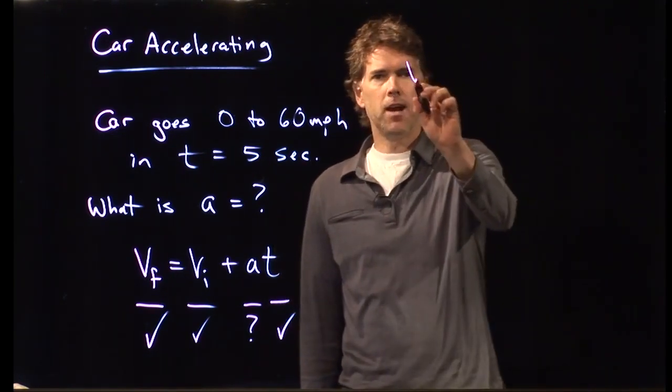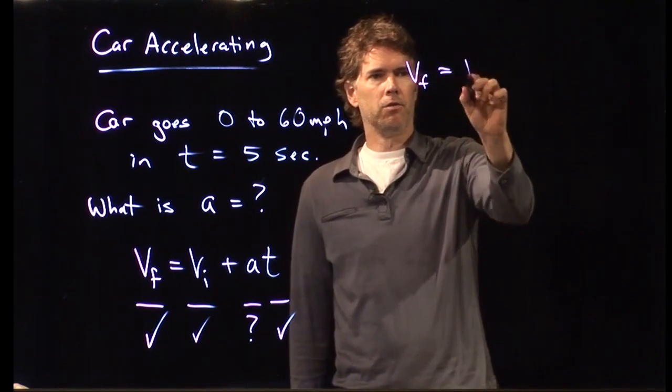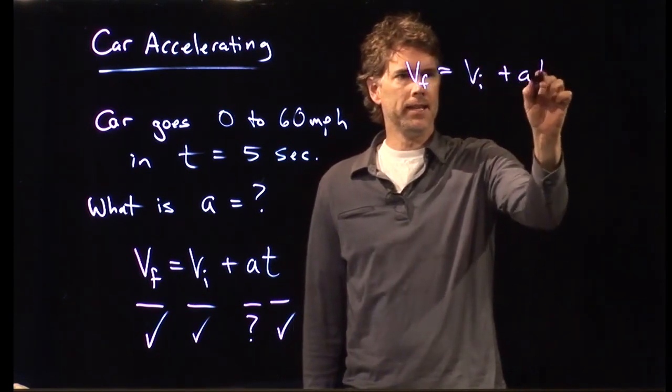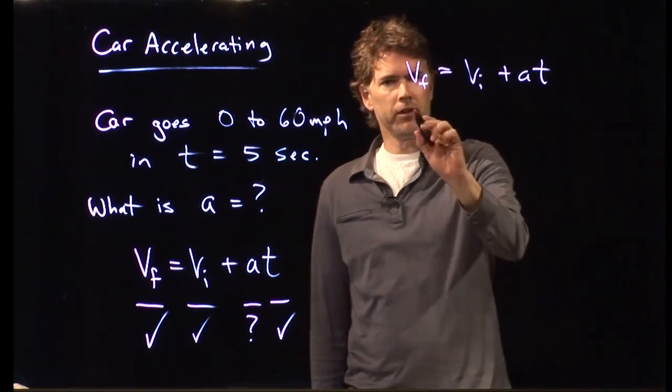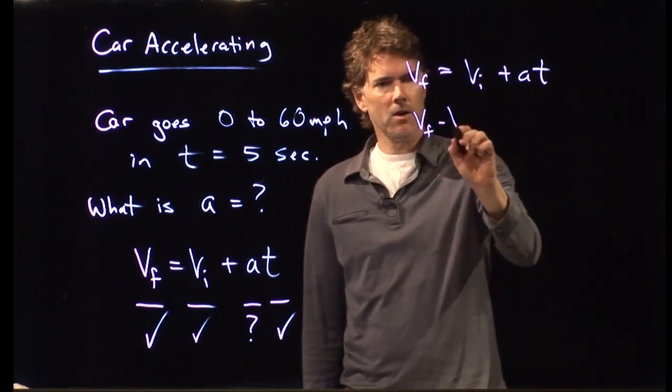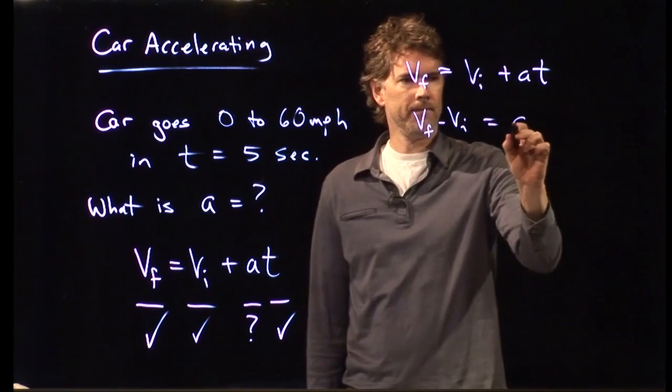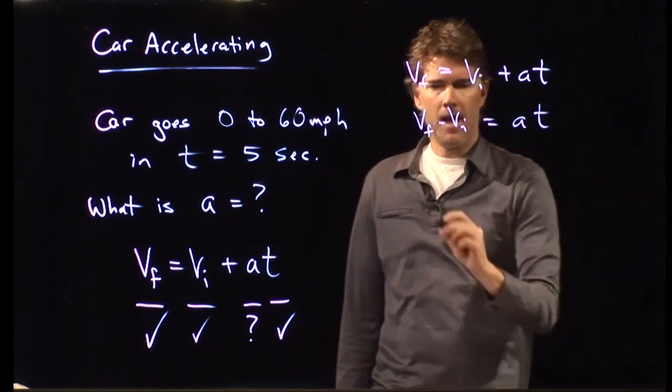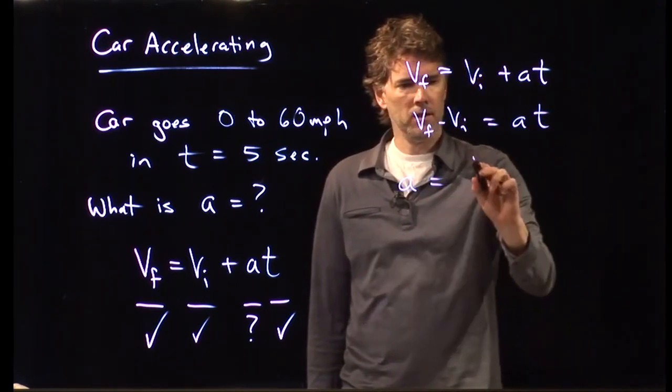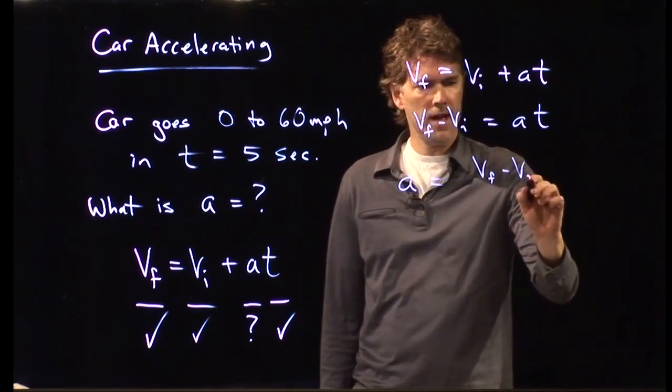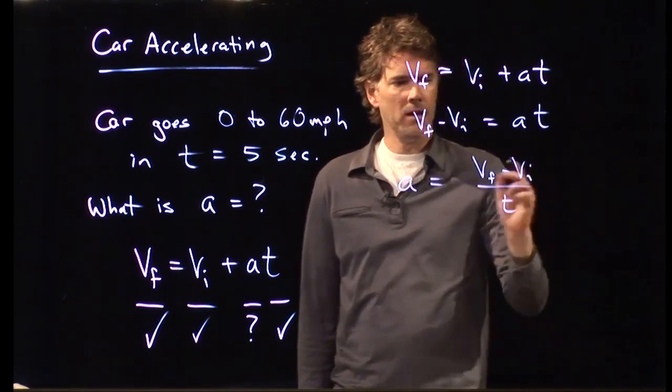We have Vf equals Vi plus At. And now we can solve this for acceleration. We'll move Vi over to the other side. And we divide by T. Acceleration is Vf minus Vi over T.